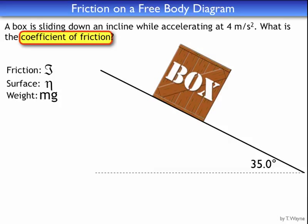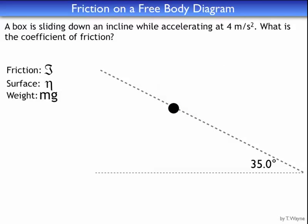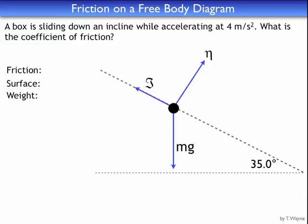I'm going to replace the box with a dot on the incline and draw the forces. Gravity always points straight down, so that's mg. The normal force is defined as being perpendicular to the surface — there's my arrow, perpendicular to the incline. Friction is defined as the opposite direction of motion. Since the box is sliding down the incline, friction points parallel to the incline and up the incline. Very similar to the last problem we did.